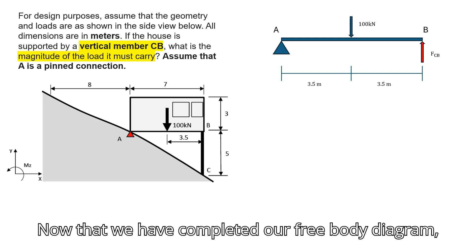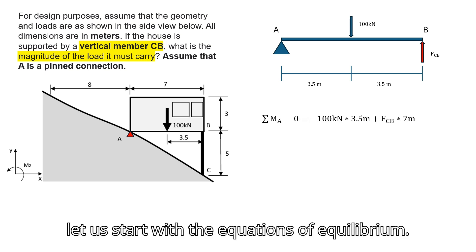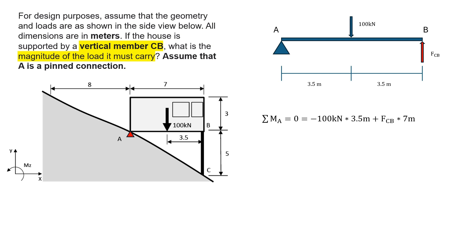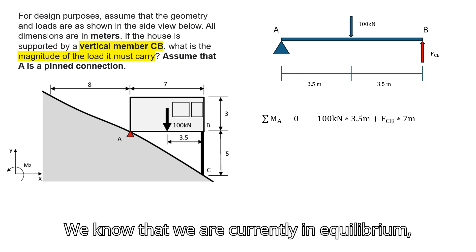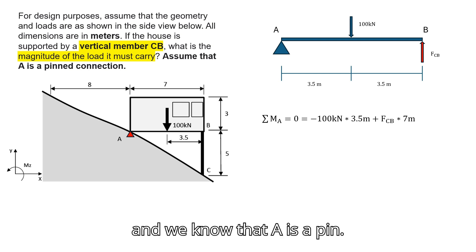Now that we have completed our free body diagram, let us start with the equations of equilibrium. We know that we are in equilibrium and that A is a pin. Therefore, the moment about A is zero.